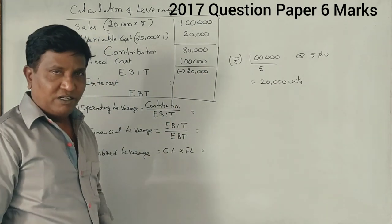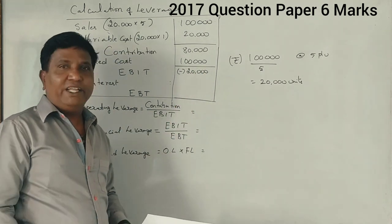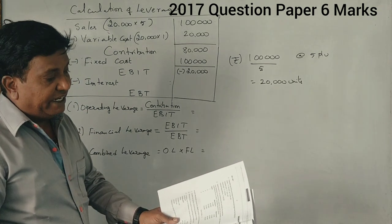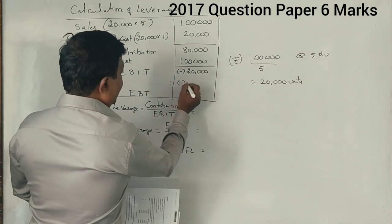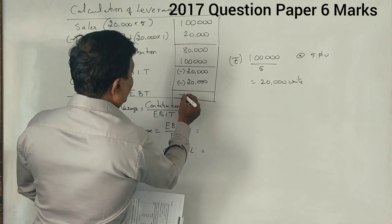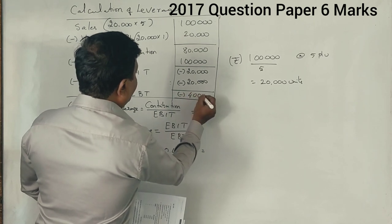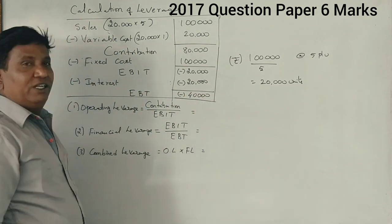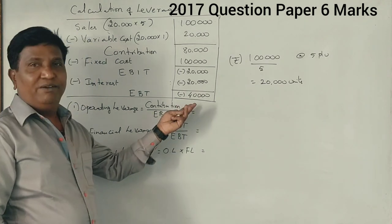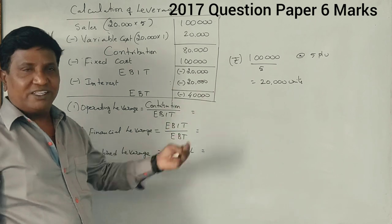Am I right? Yes sir. You are getting negative 20,000 rupees. Now in that, interest expenditure is 20,000. Here also we have to minus only. So we are getting totally 40,000 rupees of earnings before taxes. This is nothing but a loss.